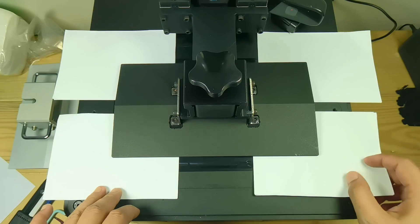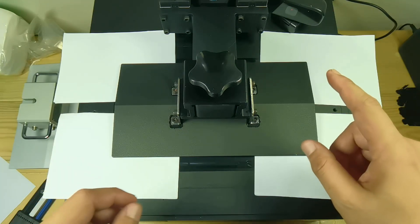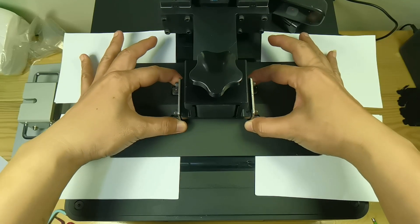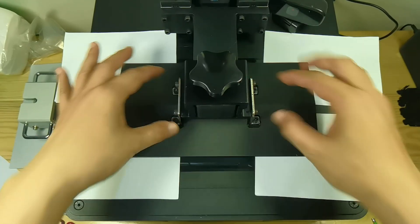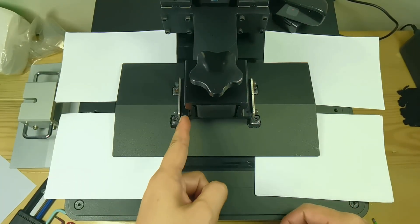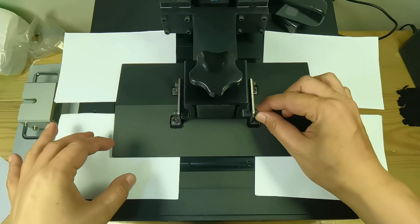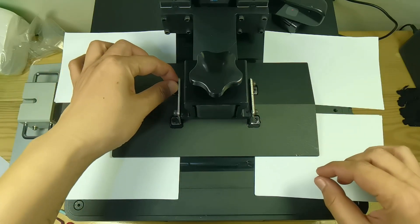Before we get to the second tip, let me show you something. The build plate has some gap over here and here. So if you start tightening the screws from this corner and then move to this corner, it will have a bigger gap here.